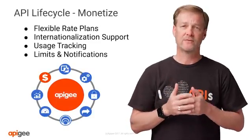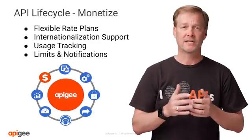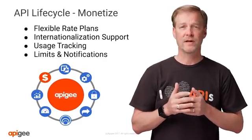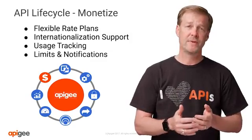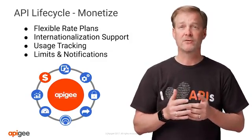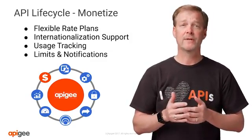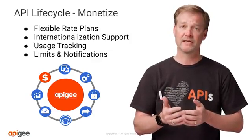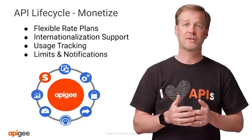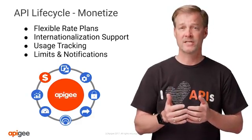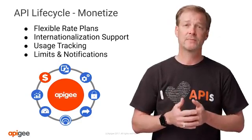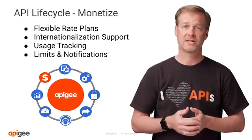Now we've come to the final phase: monetize. Giving companies the ability to set up flexible rate plans for revenue share, fee-based, or freemium-based models. This plan information is integrated into your API portal for developers to understand and sign up. Further, the Apigee platform helps ensure that API plans have payment processing integration, billing management, and the ability to report on usage as necessary.